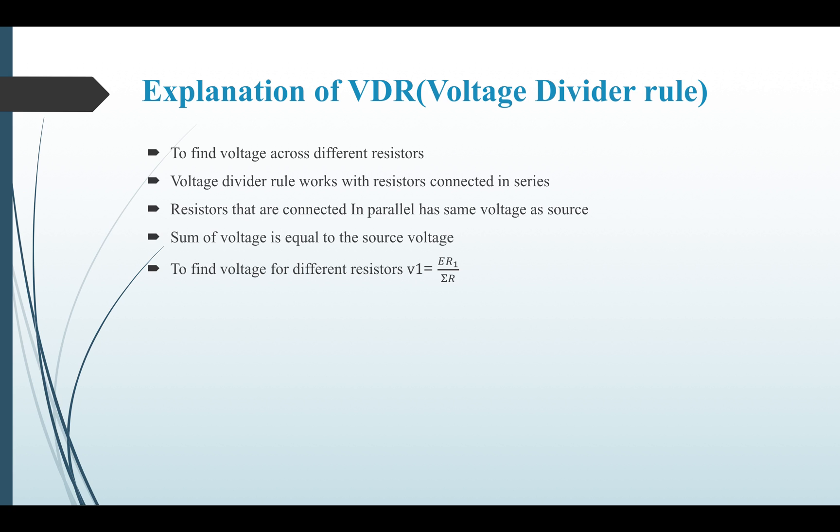Using this formula we can go to a simple circuit, this one. So if the question is to find the voltage V3 across R3, we need to use the same formula but change it: V3 equals source multiplied by R3 divided by the total resistance.